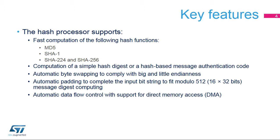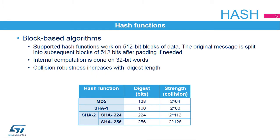The processor can be used in conjunction with the DMA for automatic processor feeding. All supported hash functions work on 512-bit blocks of data. The input message is split as many times as needed to feed the hash processor, and subsequent blocks are computed sequentially.